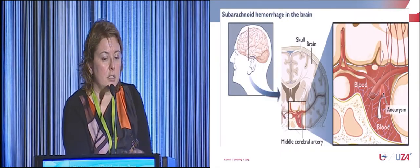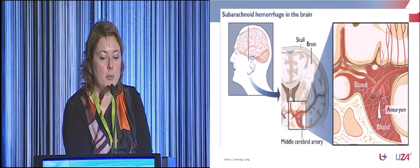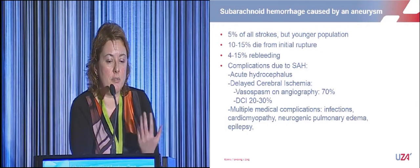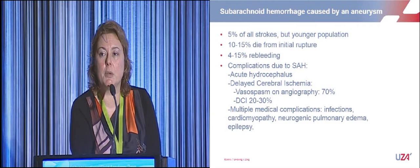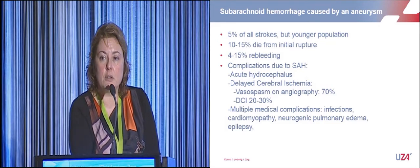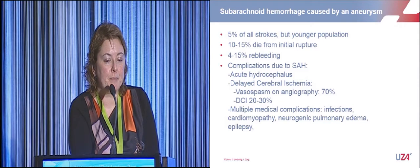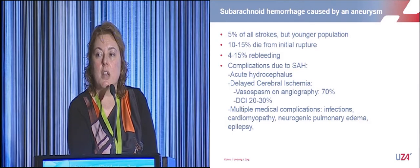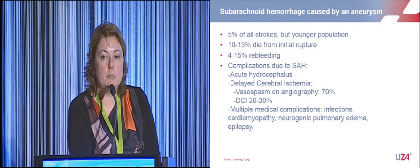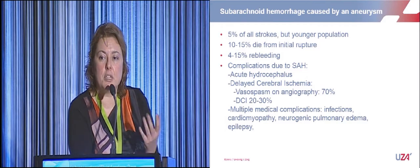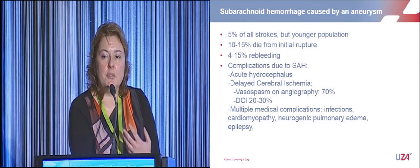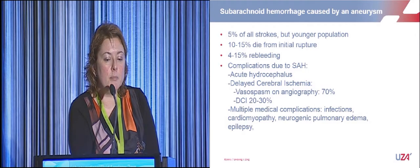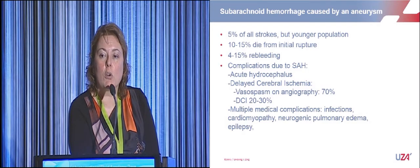Subarachnoid hemorrhage is a devastating disease, comprising only 5% of all strokes but typically affecting a younger population — 50% of patients are younger than 55 years. Ten to 15% die from the initial rupture; it can cause out-of-hospital cardiac arrest. There is a risk of re-bleeding, and the first priority is to prevent re-bleeding by closing off the aneurysm within 24 hours by clipping or coiling.